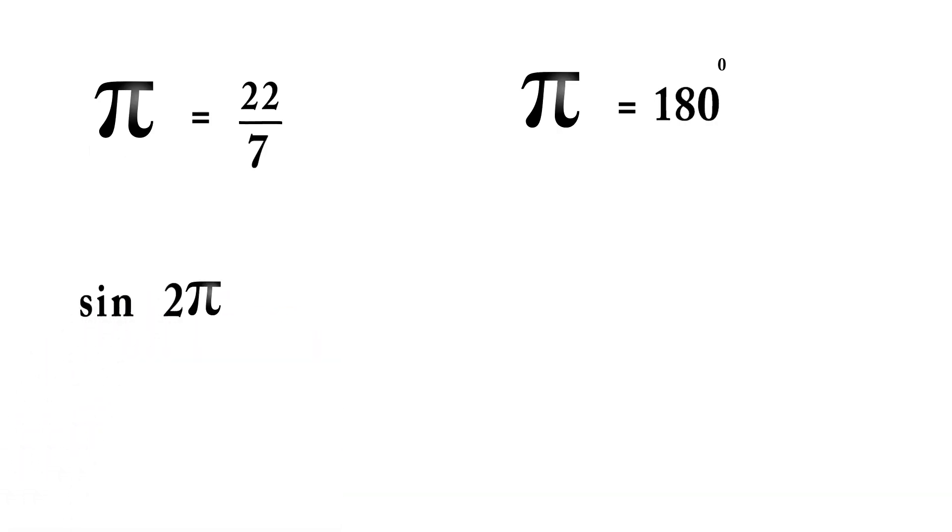And also, when π is accompanied by trigonometric functions like sine or cos, π is never 22/7, because here the π will be in angle terms.